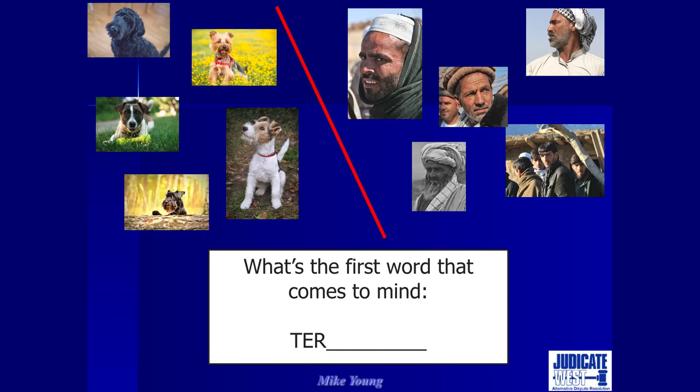There have been a lot of studies on priming to see how it impacts our behavior. Now you start to understand those first puzzles we did — when I showed you pictures of dogs and had the word fragment TER, you came up with terrier. And when I showed you images of Muslim men, you came up with terrorist. You were primed to think that way because over your lifetime you've associated pictures of dogs with terriers. And at least in North America since 2001, we've been associating Muslim men with terrorists. It's implicit in our system — those images prime us to think in a certain way.